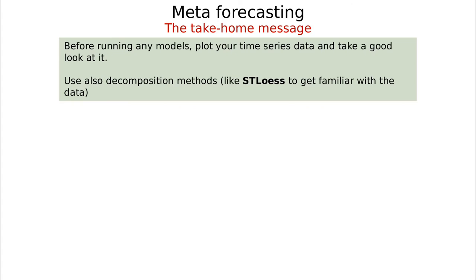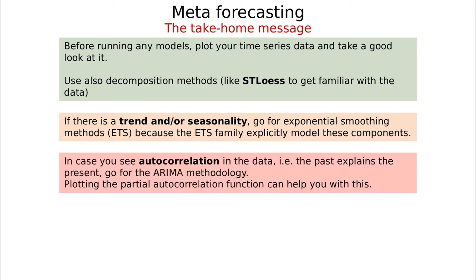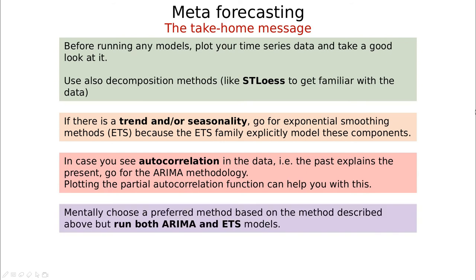You can also start using STL, where L comes from Loess, to get familiar with the trend, seasonal part, and noise. If there is some trend or seasonality, go for exponential smoothing methods because ETS explicitly models these components. If you see autocorrelations — especially with three or four lags — ARIMA is probably the best methodology. With ARIMA you can have a generating process to construct predictions into the future, and you can use autocorrelation and partial autocorrelation plots to help with model selection.